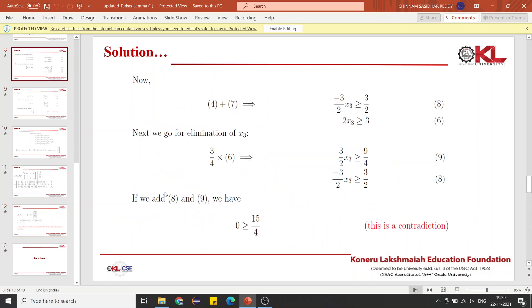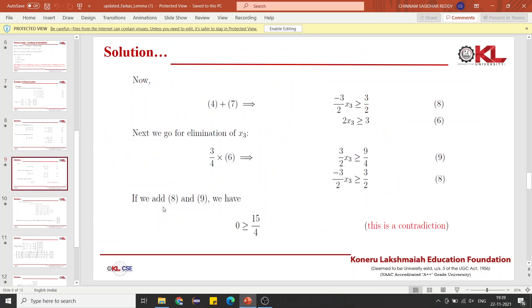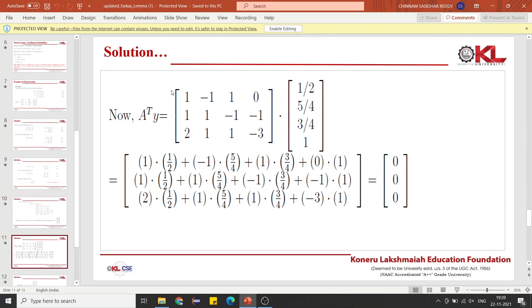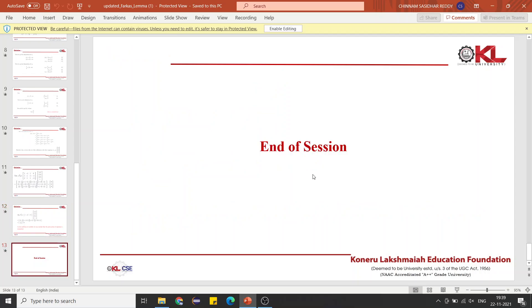The conditions are satisfied. These are the conditions for certificate of infeasibility, that is, proving Farkas Lemma: matrix Y should be greater than or equal to 0, A transpose Y should equal 0, and B transpose Y should be less than 0. This is what we proved here. A transpose Y equals 0 and B transpose Y is less than 0. Therefore, the conditions are satisfied and we can conclude that the given system of equations is inconsistent. That is it. Thank you.